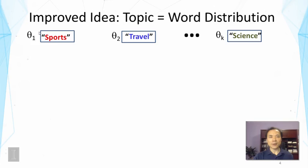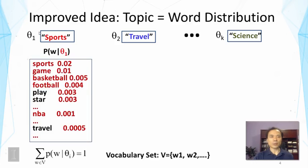The basic idea here is an improved representation of topic as a word distribution. The old representation had each topic represented with just one word or term or phrase. Now we're going to use a word distribution to describe the topic. For sports, we use a word distribution over theoretically all the words in our vocabulary. The high probability words are sports, game, basketball, football, play, star, etc. It also gives non-zero probability to words like travel, which might be slightly related but not strongly.